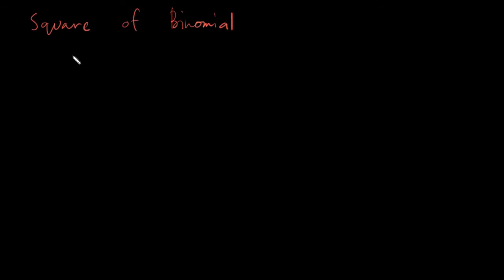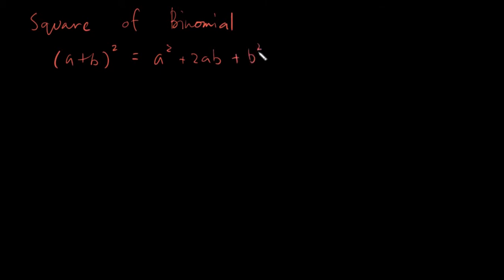Square means of course we raise to the 2. The basic structure of our square of binomial would be: we have terms a and b, we get the square of that, and the answer would be on the structure of a squared plus 2ab plus b squared. The square of binomial is derived from the distributive property or the FOIL method when it comes to multiplying a binomial by itself.